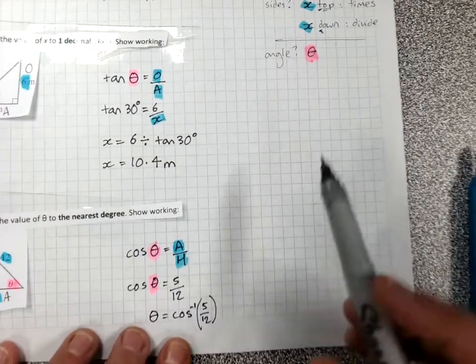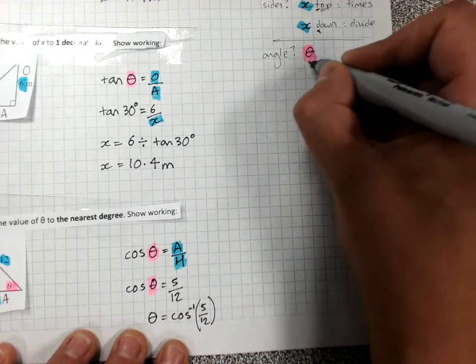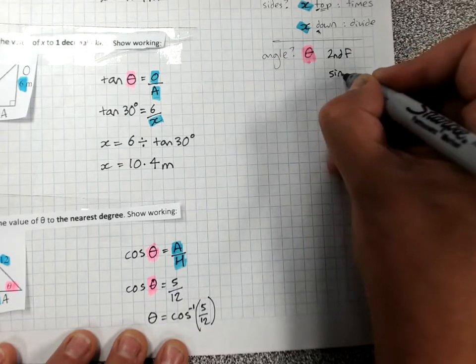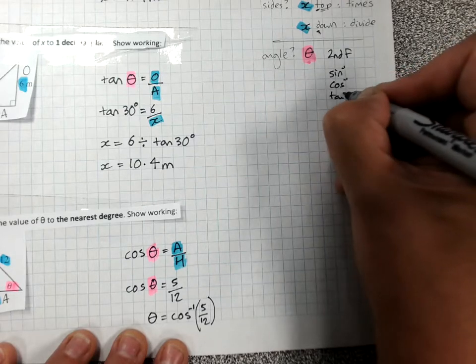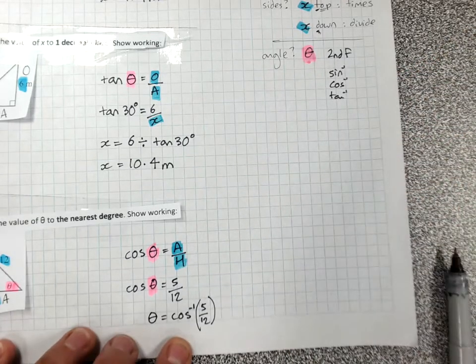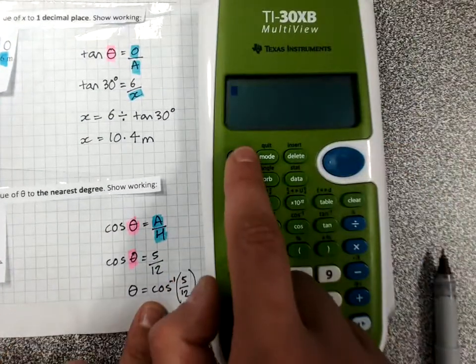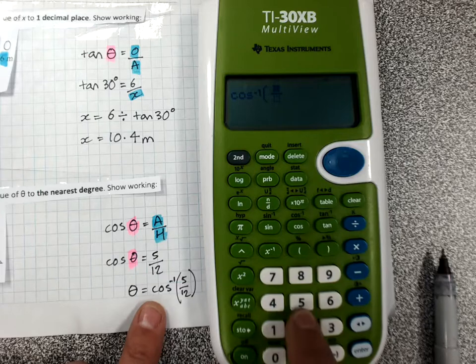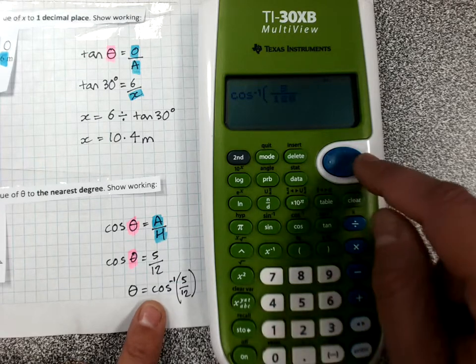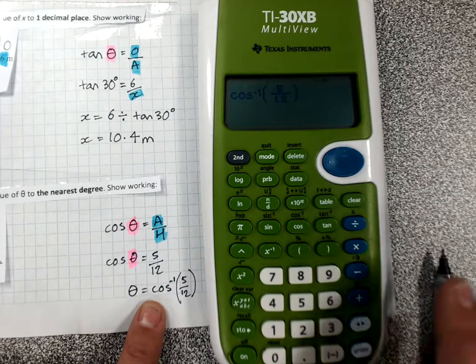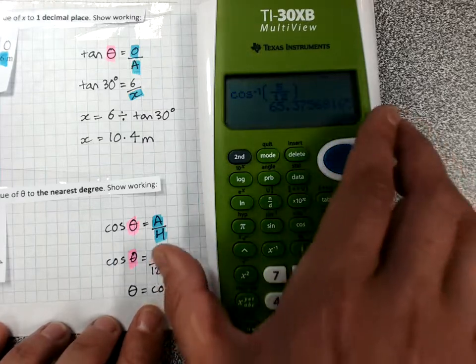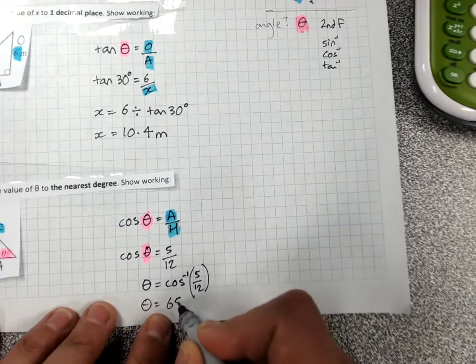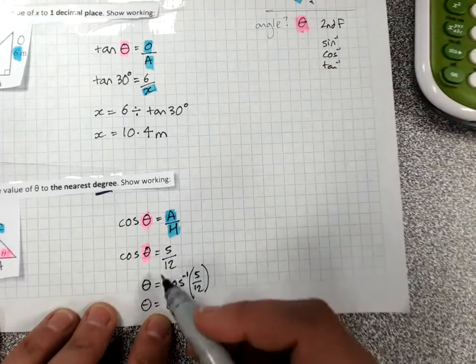But we've got to remember, when we're finding an angle, I'm using that second function key. So, it's either going to be sine minus 1, cos minus 1, or tan minus 1. And it's the second function to get those. Come over to the calculator. Second function, cos. Off in a little starter bracket for you. Fraction, 5 over 12. Hop out of the fraction. Close your bracket. Enter 65.37. And we go for the nearest whole number for an angle. Theta equals 65. And it's angles. So, it's degrees.